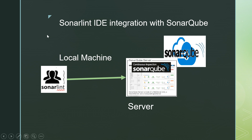All team members' code can be tested to meet those quality-related expectations. This is the relationship between SonarLint and SonarCube: SonarLint is for the local machine and SonarCube is for the server. On the local machine, each team member can test his code. But when we have a common set of standards for which all team members' code is to be checked, we can use SonarCube.